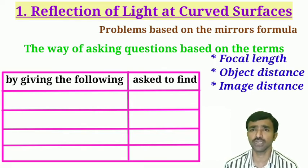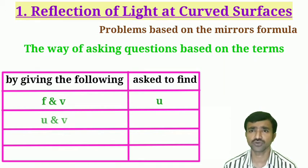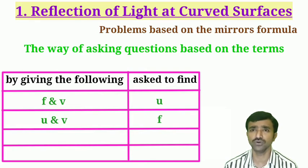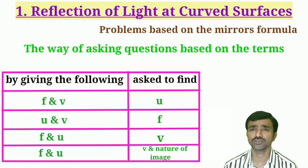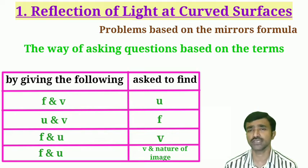For example, if focal length and image distance are given, you may be asked about object distance. If object distance and image distance are given, focal length will be asked. So there are three such possibilities, and one more possibility is asking the nature of the image. These are the four varieties of questions asked based on the mirror formula 1/f = 1/v + 1/u.